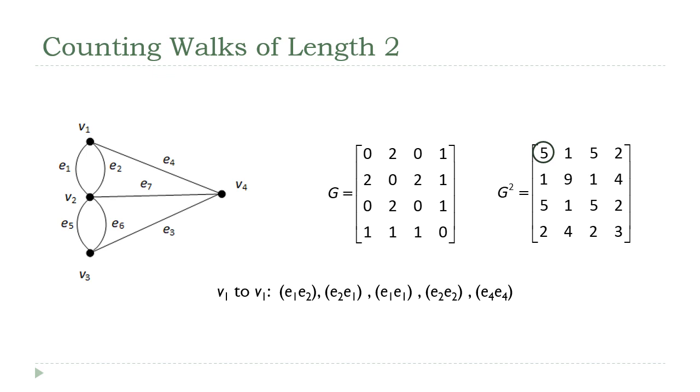All right, so let's try another one. See if you can map out all of the, again, sticking to walks of length two. But this time, let's not do a circuit. Let's do between V2 and V4. Find all the walks of length two between V2 and V4. See what you can come up with.